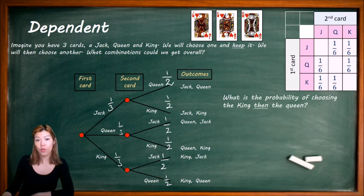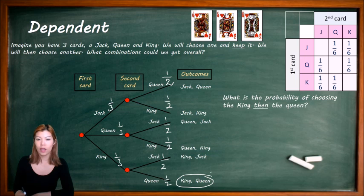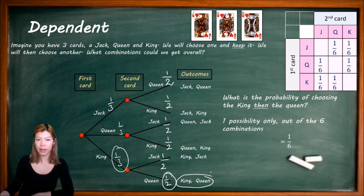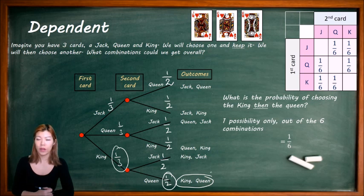Asking the same question as before will not give us the same answer. What is the probability of choosing the King then the Queen? Now it is only 1 out of 6 outcomes — a third times a half gives us 1 over 6 instead of 1 over 9. So that is the difference between dependent and independent. Dependent is when the second probability has changed because of the first outcome, whereas independent is when the second probability is not affected by the first event.